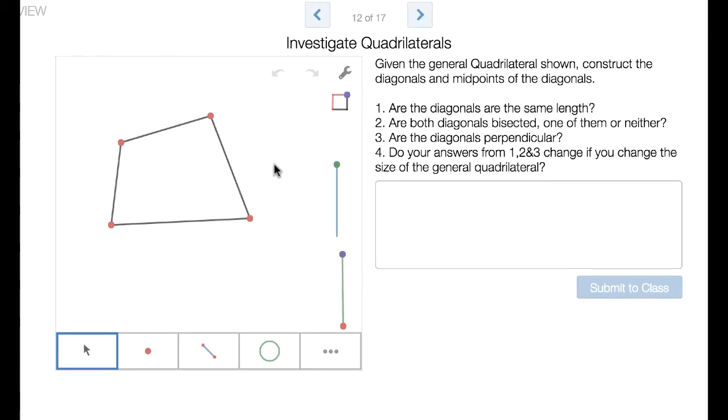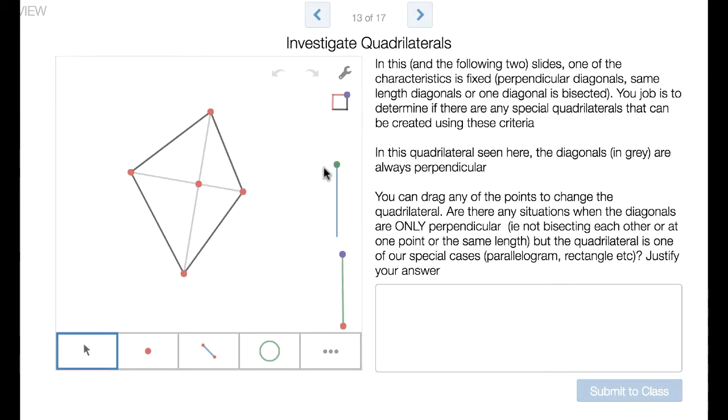We're looking at some special general quadrilaterals here. This is just any quadrilateral in this slide, so it can be changed into any shape. Then we have some quadrilaterals that have certain properties. In this case, this is one where we're looking at a quadrilateral where the diagonals are always perpendicular to each other, and that's the only characteristic. Depending on how they move the points, they get different quadrilaterals made and they can check the properties there.